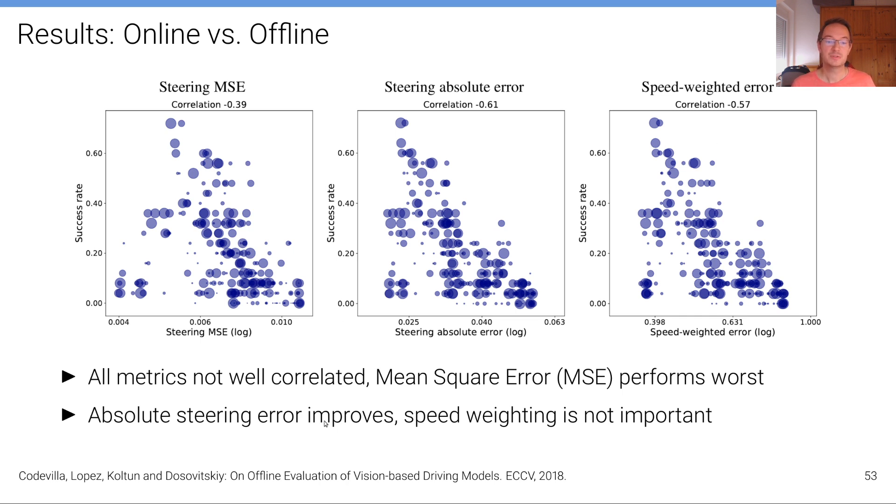What we can see is that the absolute steering error improves over the mean squared error. So the absolute error is a better proxy for the success rate, but it's still not super well correlated. And the speed weighting is actually not important.